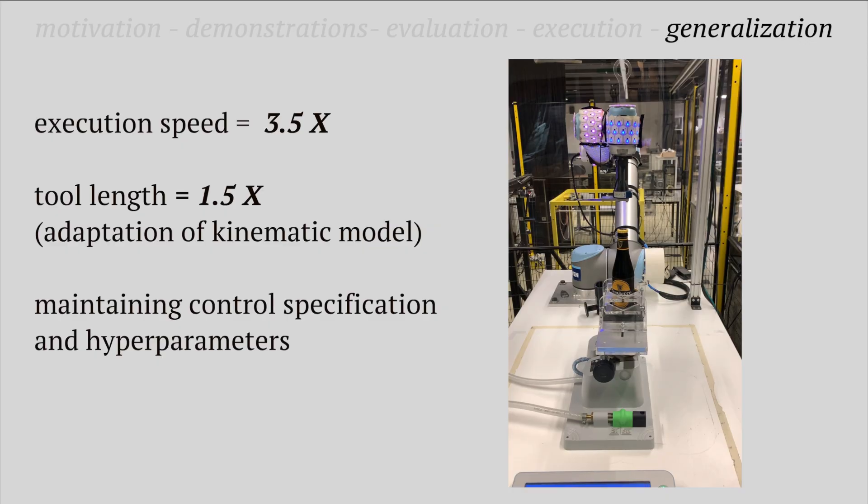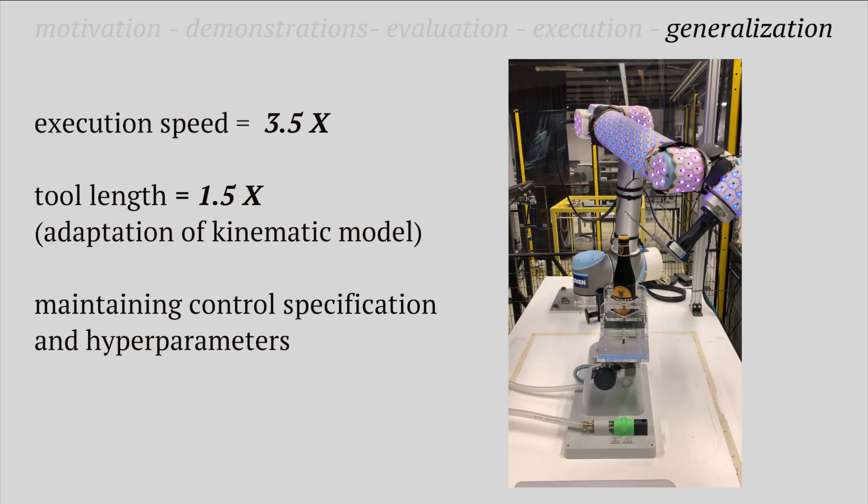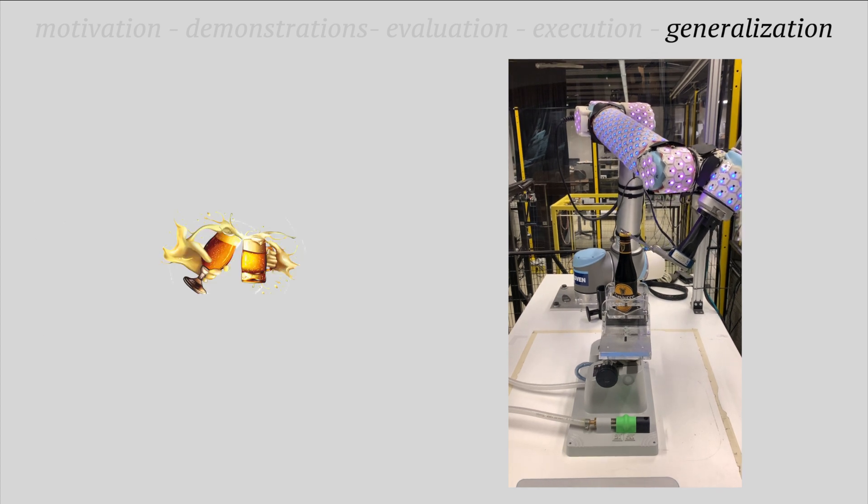We further generalize by increasing the execution speed 3.5 times, the tool length 1.5 times, adapting the kinematic model while maintaining control specification and hyperparameters. Our robot is able to open the beer in 5 seconds.